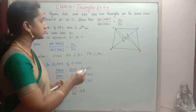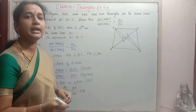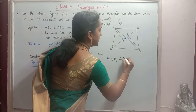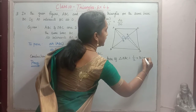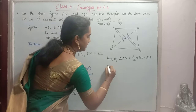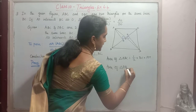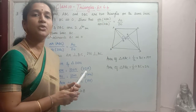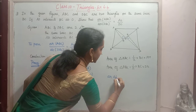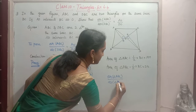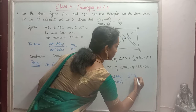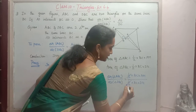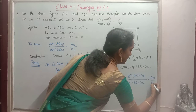Now, area of triangle ABC equals half into base BC into height AM, and area of triangle DBC equals half into base BC into height DN. Cancelling the common factors — half and BC — we get: area of triangle ABC by area of triangle DBC is equal to AM by DN.